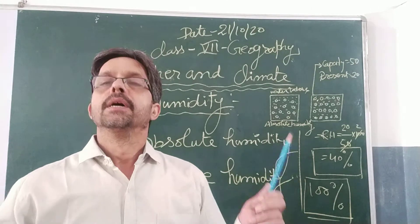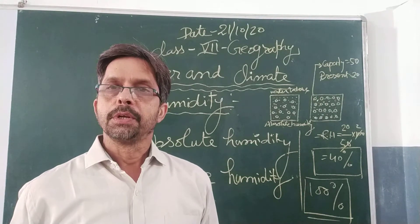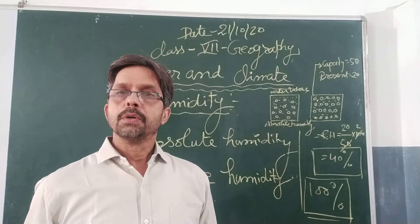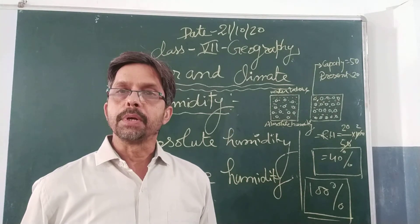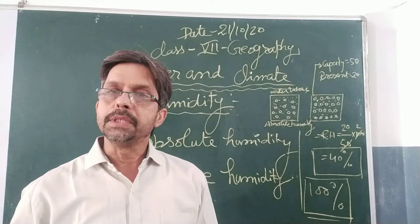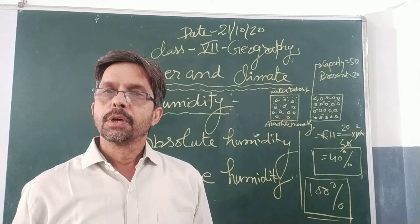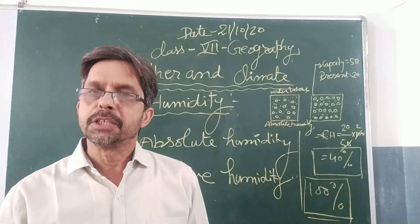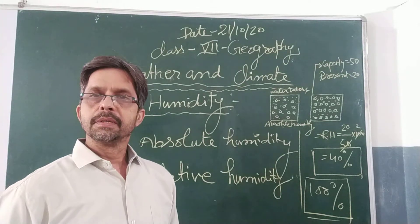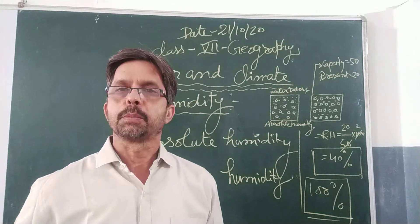After reaching 100% relative humidity, various phenomena can happen: rainfall, fog, dew, hail, or snow. These phenomena are collectively called precipitation, which I will explain afterward.